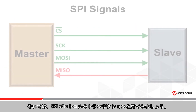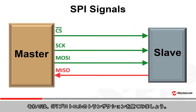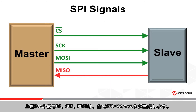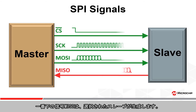Now let's look at an SPI protocol transaction. The top three signals — CS, SCK, and MOSI — are all generated by the SPI bus master, and the bottom signal, MISO, is generated by the slave that is selected.